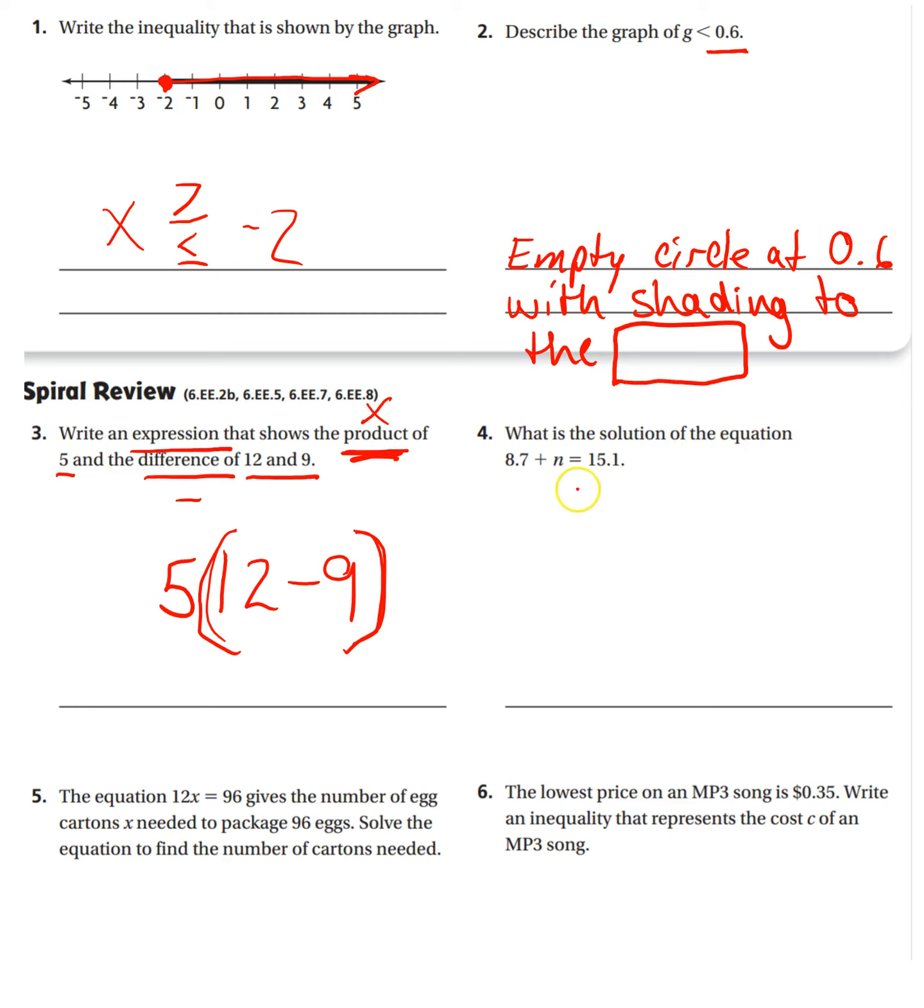Number four, what is the solution of the equation? Remember our goal is to get this n by itself, so I have to get rid of this 8.7, so I do the inverse operation of adding, which is subtracting, and you're going to subtract 8.7, but from both sides to get what n equals, and I'll let you do that on your own.